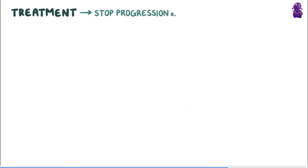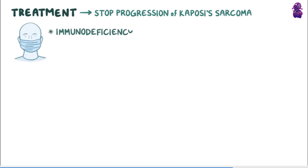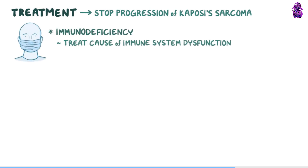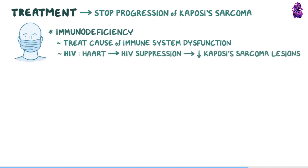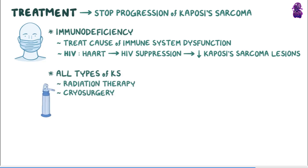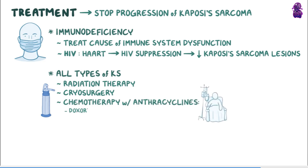Treatment is mainly aimed to stop the progression of Kaposi's sarcoma as the disease is not curable. When it occurs in individuals with immunodeficiency, treating the cause of the immune system dysfunction can slow or stop the progression of KS. For example, in HIV-infected individuals, treatment is done using highly active antiretroviral therapy, or HAART, which leads to HIV suppression that may shrink Kaposi's sarcoma lesions. In all types of KS, skin lesions can be treated with local measures such as radiation therapy or cryosurgery, and in cases of widespread disease with involvement of internal organs, chemotherapy can be used with anthracyclines such as doxorubicin, daunorubicin, thalidomide, or paclitaxel.